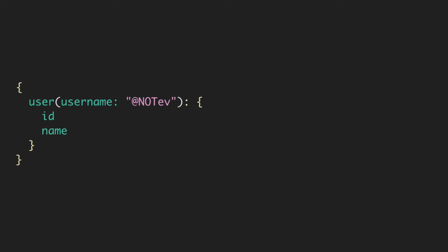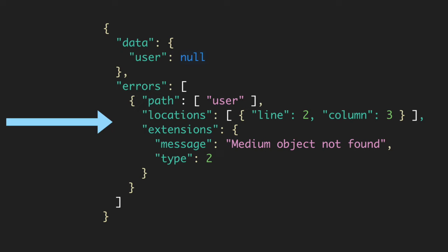So let's look at what a query might look like for a user that doesn't exist. The same exact query — the username is not Ev. That user is not real. So what happens? Let's make the query. And we get something that looks like this. So we have our data here, the user is null, and then we have all these errors. It kind of tells you-ish what's going on. We have a path, which is the user, and then we have locations like line and column, and some extensions in there. So it'll be telling us like medium object not found, type 2. This is like an enum.